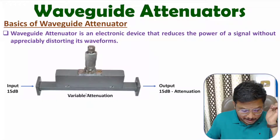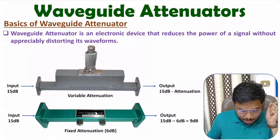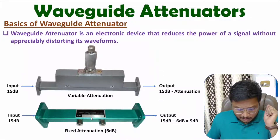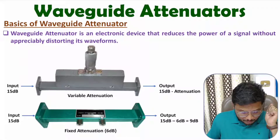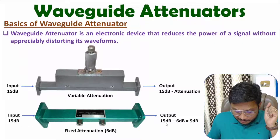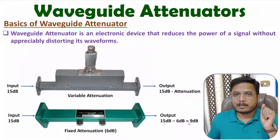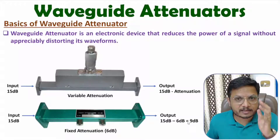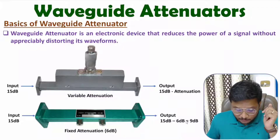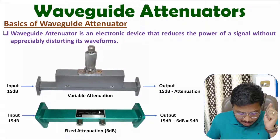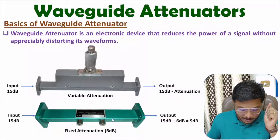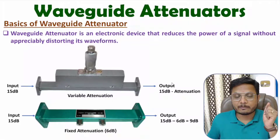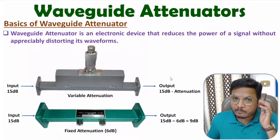The second type is the fixed attenuator, which you might have used in your lab as well. This is a 6 dB attenuation fixed attenuator. If input power is 15 dB, then at the output side power will be 15 minus 6, meaning 9 dB. So in general there are two categories of attenuators: variable attenuator and fixed attenuator. In a fixed attenuator, a fixed amount of attenuation occurs, specified in dB. In a variable attenuator, by changing the probe, one can change the attenuation.